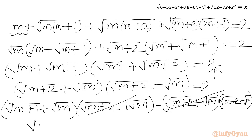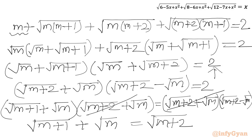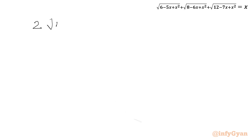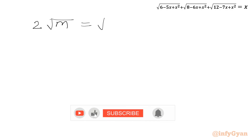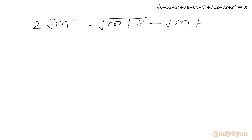After cancelling √(m+2) + √m from both sides, we are left with √(m+1) + √m = √(m+2) − √m. Taking −√m to the LHS and √(m+1) to the RHS gives 2√m = √(m+2) − √(m+1).